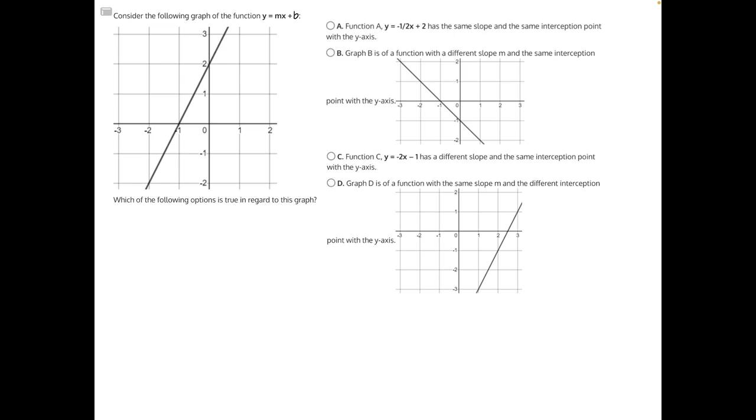Consider the following graph of the function y equals mx plus b. Which of the following options is true in regard to this graph? Answer choice A says function y equals negative one half x plus two has the same slope and the same interception point with the y-axis.